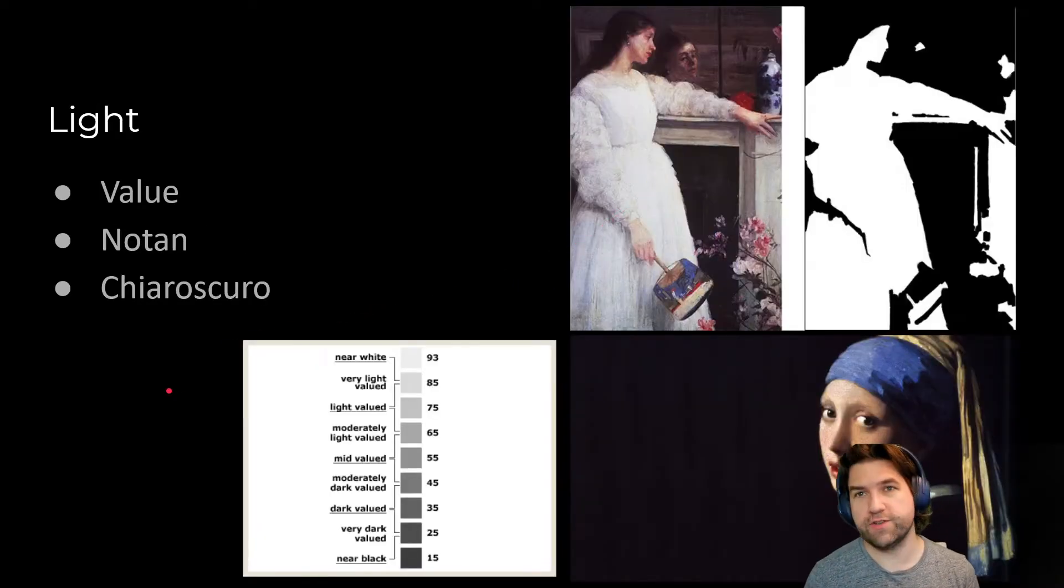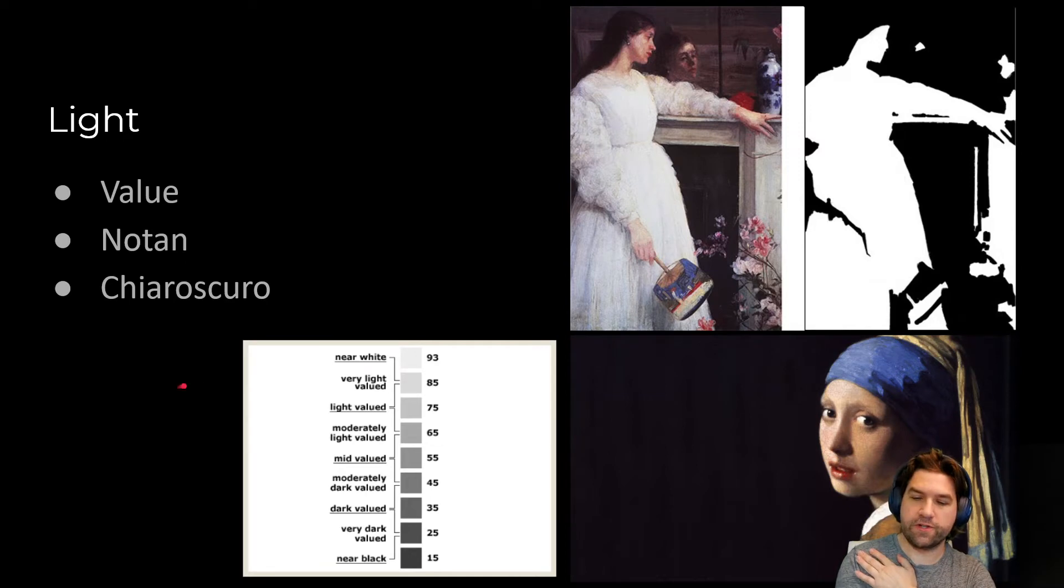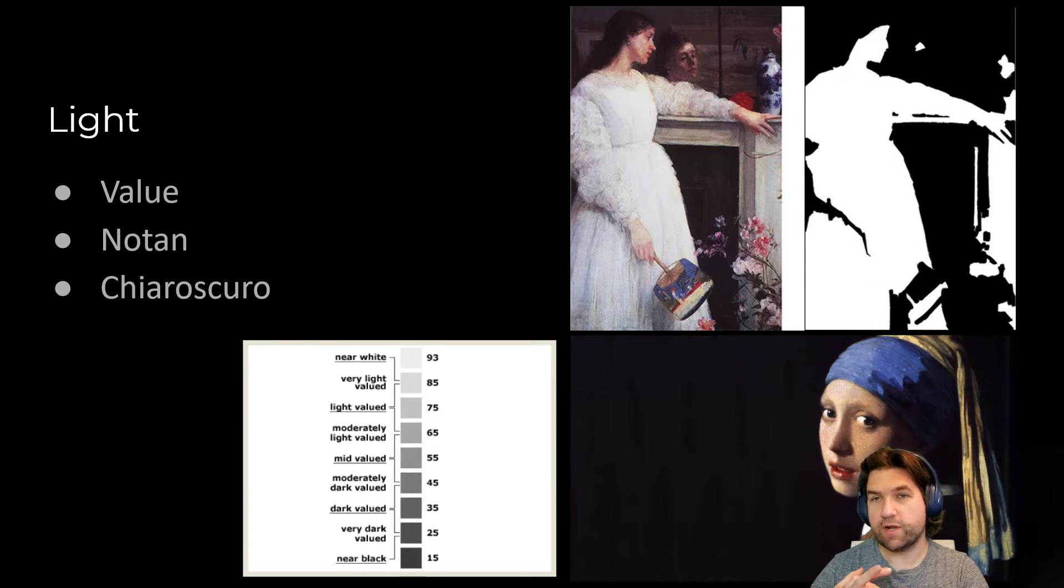Light has a lot of properties to it in terms of thinking about it. For one is value. If you've ever taken a painting class, one of the first things that they'll have you do is try to create a gradation from white to black. It introduces you to mixing color, but it also helps you to think in terms of grayscale.